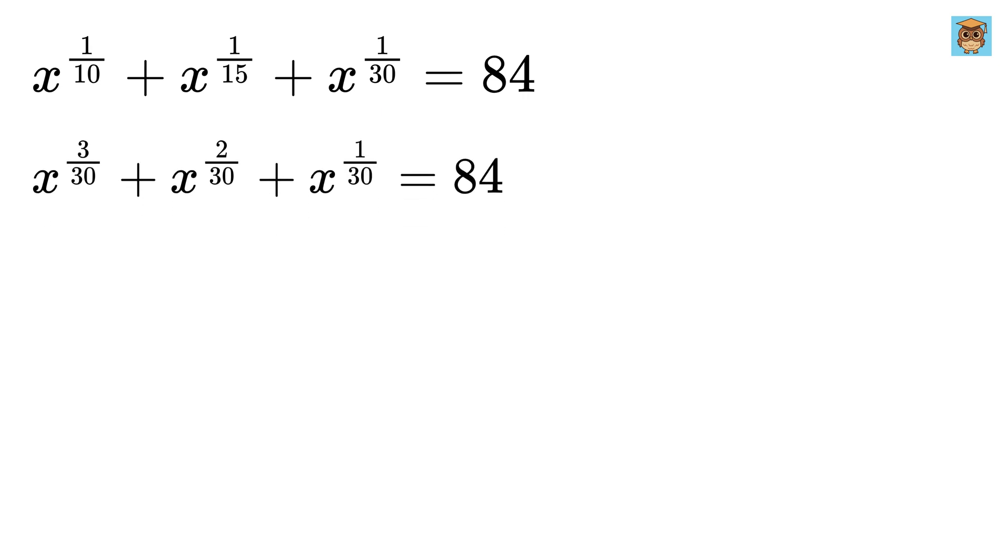Next we observe that all these powers of x have the denominator 30, which makes it easier to group them. Just keep this power rule in mind: we have a raised to m whole raised to n equals a raised to m times n. Now x raised to 3 over 30 can be written as x raised to 1 over 30 whole raised to 3.